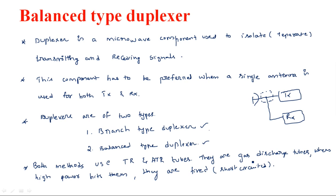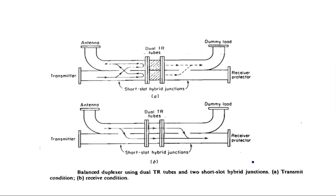Now let us see how TR and ATR tubes are used in the construction of the balanced type duplexer. In the balanced type duplexer, we use only TR tubes — not ATR tubes — whereas in the branch type duplexer, both TR and ATR tubes are used. This is the construction of the balanced type duplexer with two TR tubes, called dual TR tubes.